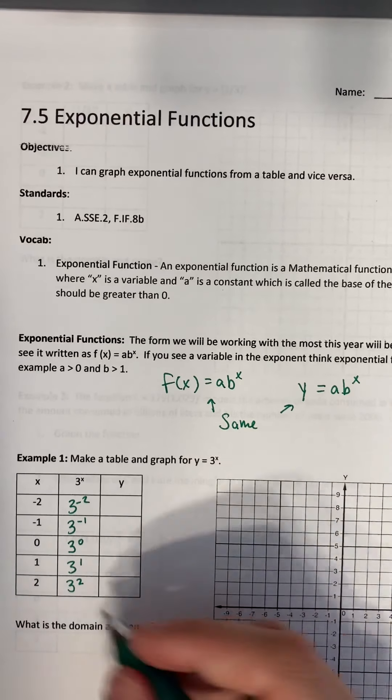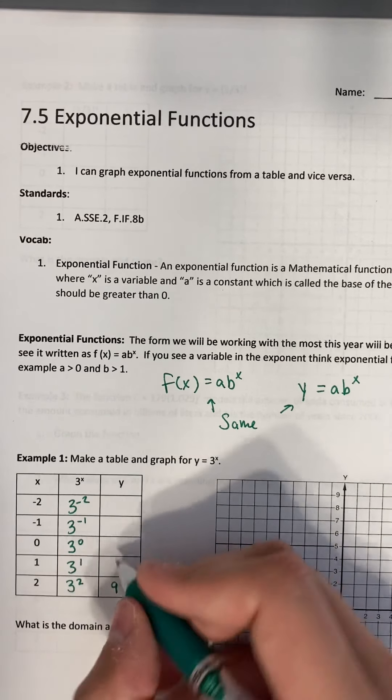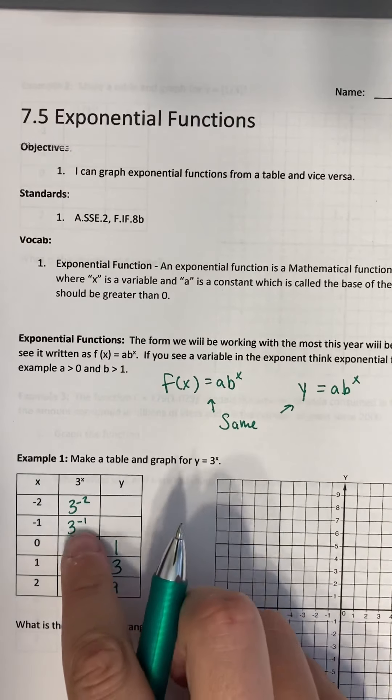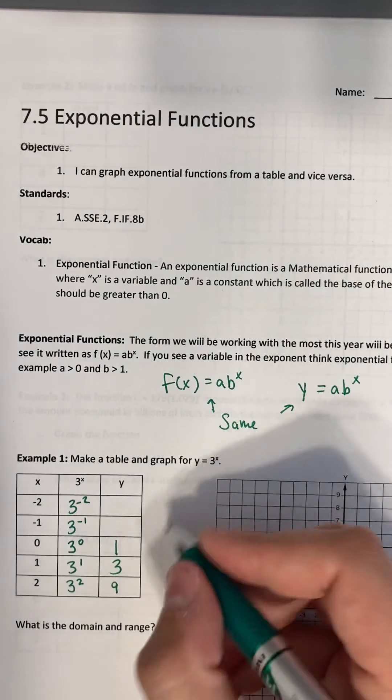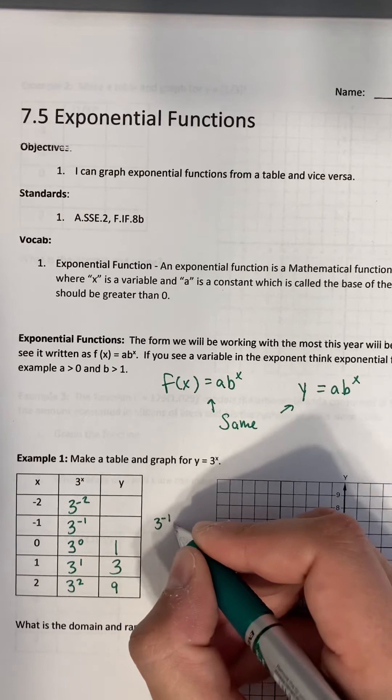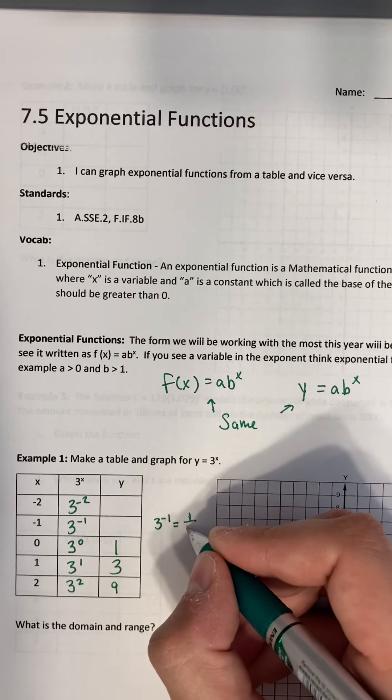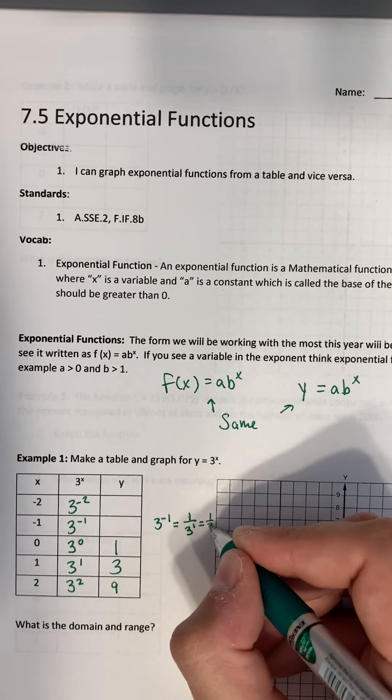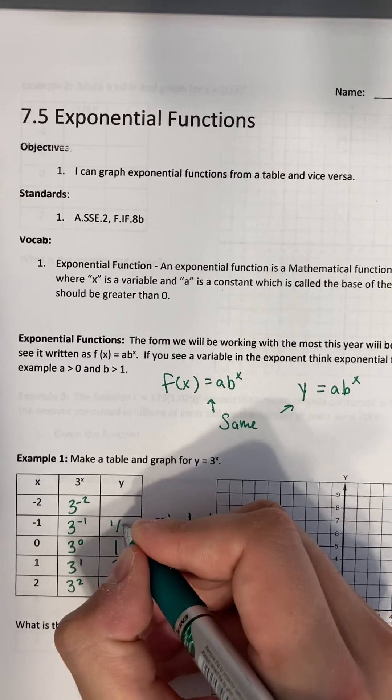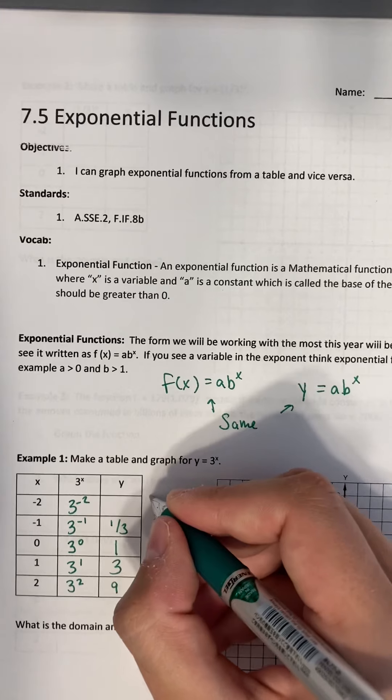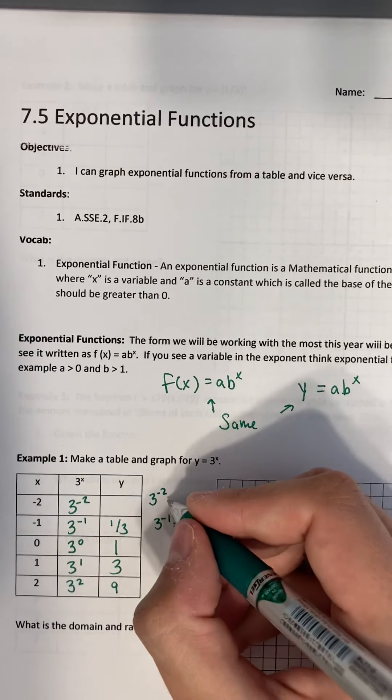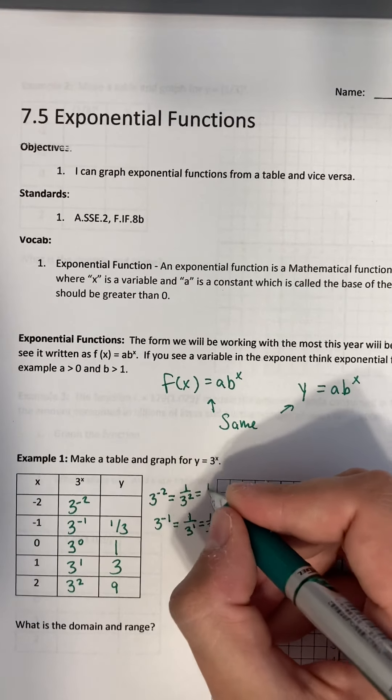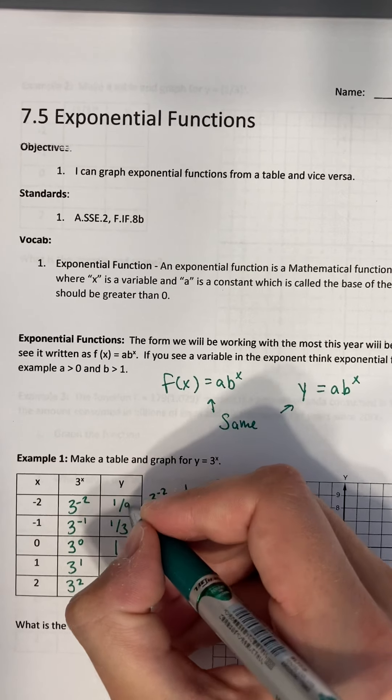When you evaluate these, three squared is nine. Three to the one power is just three. Three to the zero power we learned was one. Three to the negative one, if you remember last week, is the same thing as one over three to the one power, which is just three. So you just get one third here. Then for this one, three to the negative two power, we can rewrite that as one over three squared, which is one ninth.